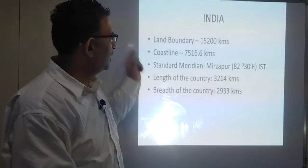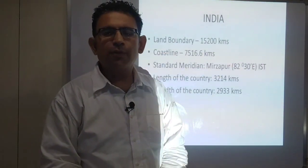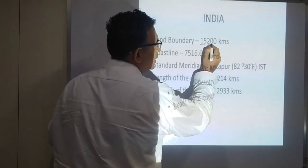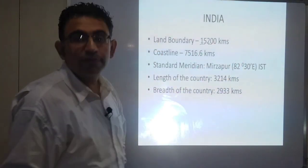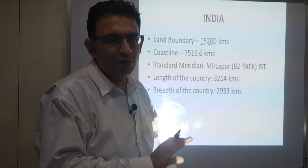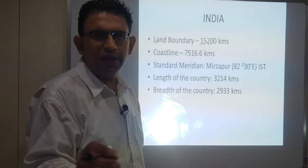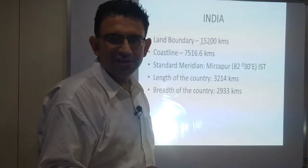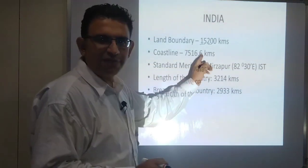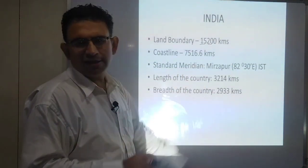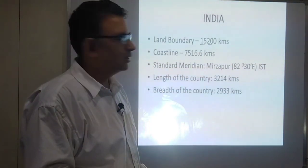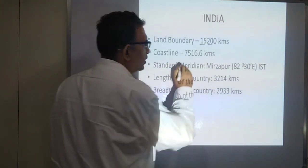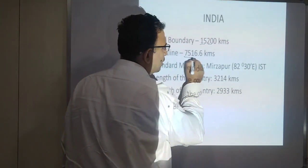Very simple — 15,200 kilometers. I just remember the technique once and I don't want to remember this ever again. 15, 20 — we say in Hindi 'pandarabish.' Pandarabish dedo — that's 15,200. Land boundaries done! Let's look at the coastline — slightly complex: 7516.6 kilometers.